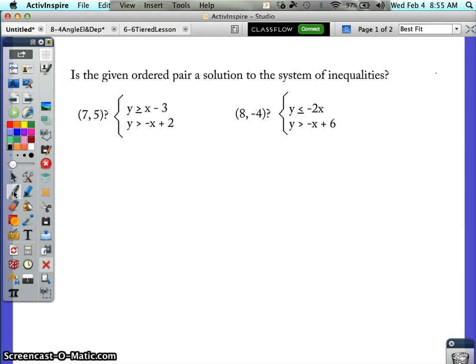You're going to do what you did before. If I want to know if this ordered pair is a solution to the system of inequalities, plug it in and substitute. Remember that 7 stands for x and 5 stands for y, but instead of just plugging it into one inequality, now because we have a system, we need to plug it into both.